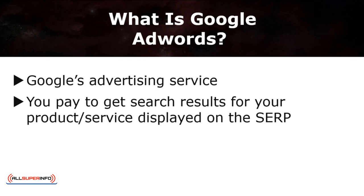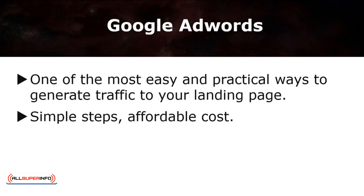Let me give you a brief summary of what Google AdWords is. Google AdWords is Google's own advertising service, which allows you to place search results for your own website or landing page. The search results for your product or service will appear on the Search Engine Results page, or the SERP, which you would have to pay a certain amount to get your results displayed. Google AdWords is one of the easiest and most practical ways to generate traffic to your landing page.